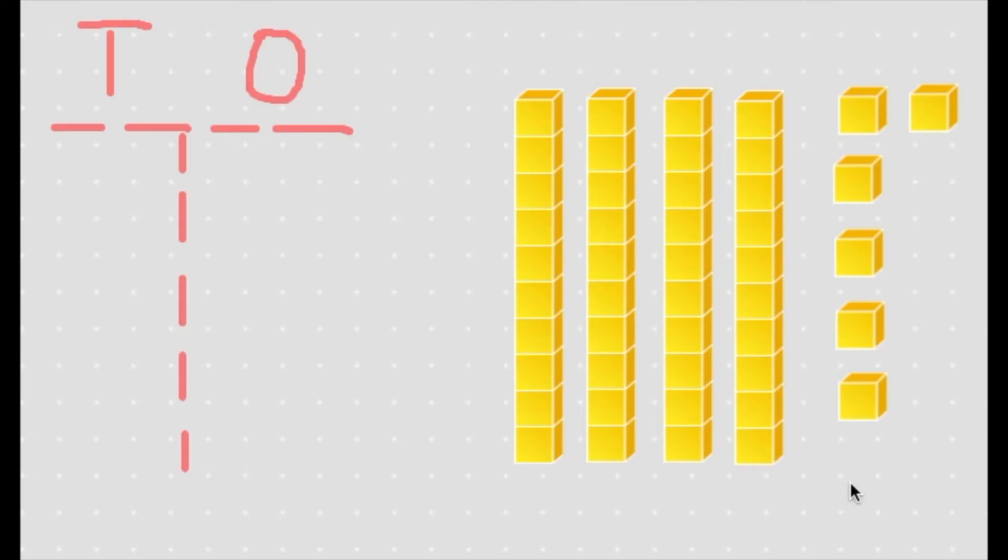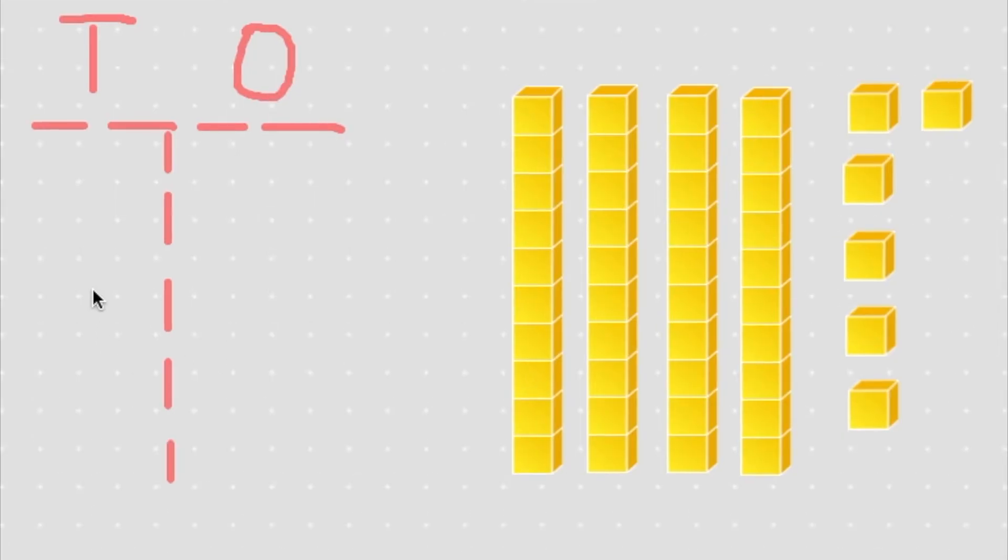Let's put the number 46 into our tens and ones chart to see which number is in the tens place and which number is in the ones place. To decide what number belongs here in the tens place we need to see how many tens we have. Remember a 10 is a long. So we have one, two, three, four longs or four tens. So the number four can go into the tens place.